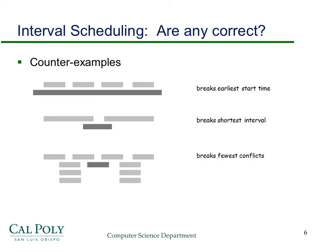Here are some counterexamples. For earliest start time: here we have a job that starts early but runs for a very long time. If we'd ignored that job, we could have done the other four jobs. Clearly, for this example, earliest start time does not give you the largest compatible set. Similarly, for shortest interval: this is the shortest of the three intervals, but once you've chosen it, you can't add either of the other two to the compatible set. Obviously, if you just pick the two non-overlapping ones, you'd have a compatible set with two jobs — and that would be optimal.